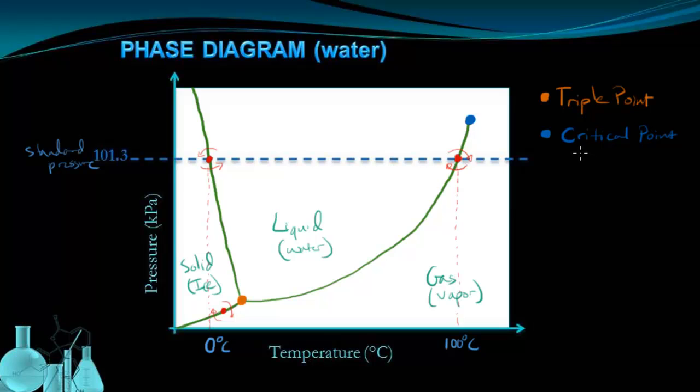The critical point is defined as a set of temperature and pressure that we call the critical temperature and the critical pressure, which just means that the pressure and temperature values at this point are referred to as the critical pressure and the critical temperature.